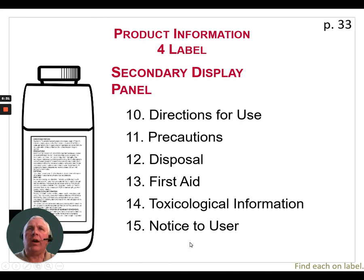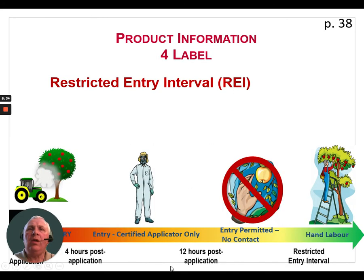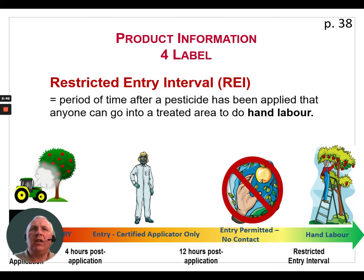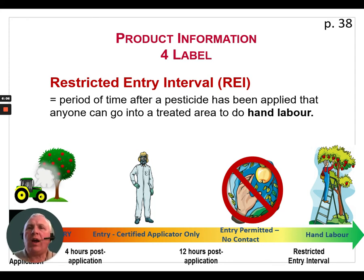Another thing on the secondary label is the restricted entry interval (REI). This is a period of time after a pesticide has been applied during which anyone doing hand labor cannot enter a treated area. In this example, the label specifies a 24-hour REI. The clock starts when application is completed and you leave the field or greenhouse.